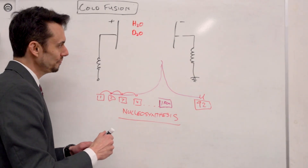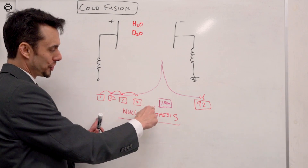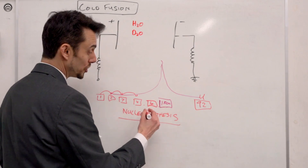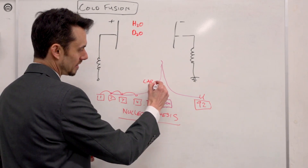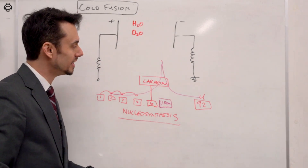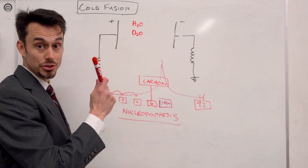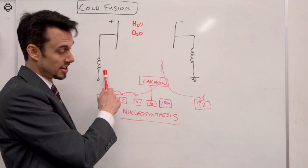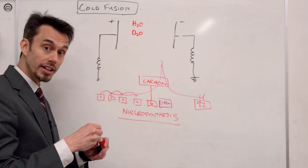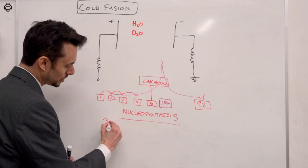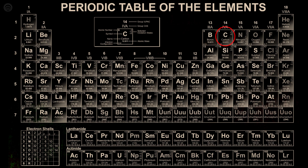As you go up the chain you get to number six, which is carbon. Now here's what's interesting — D2O has extra neutrons, and if we do nucleosynthesis in this process we get to carbon eventually. Our research suggests that if you put in 30 volts, you step up to carbon and then it stops.